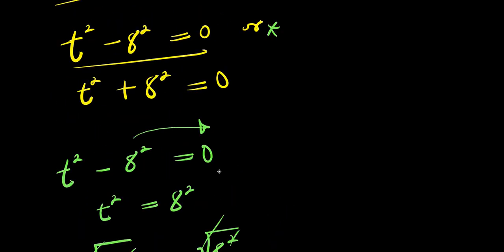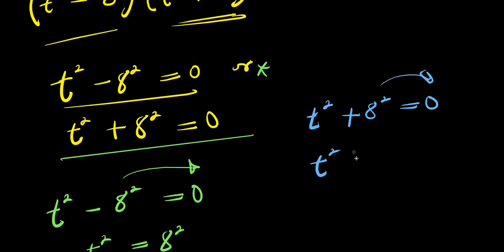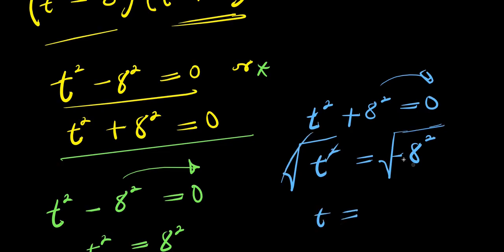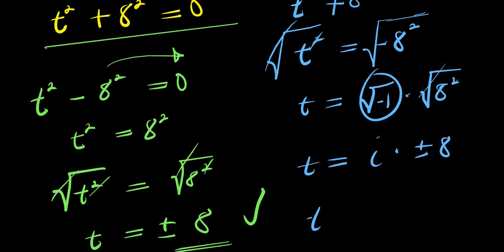Now let's consider the other equation: t power 2 plus 8 power 2 equals 0. Moving the term over, this becomes t power 2 equals negative 8 power 2. Taking the square root, we have t equals square root of negative 1 times square root of 8 power 2. The square root of negative 1 is the imaginary unit i, and the square root of 8 power 2 is 8, so t equals plus or minus 8i.